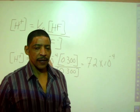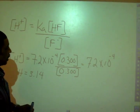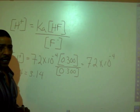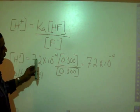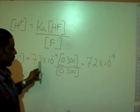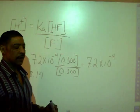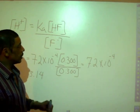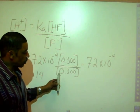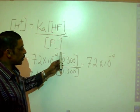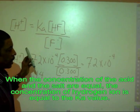The concentration of hydrogen ion may now be calculated by using the Ka expression, which in this case has been rearranged to solve for the concentration of hydrogen ion. Substituting our values, we have Ka, which is 7.2 times 10 to the minus 4, times the concentration of our acid, which is 0.300 molar, divided by the concentration of the anion from our salt, which is 0.300 molar. So these values cancel, and therefore the concentration of hydrogen ion is actually equal to our Ka.